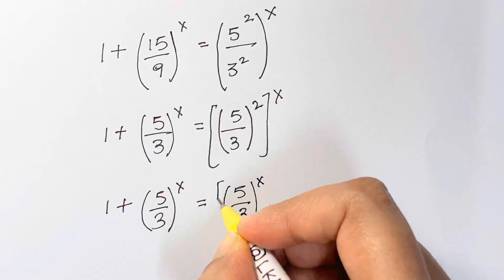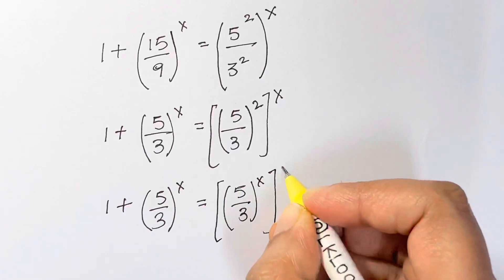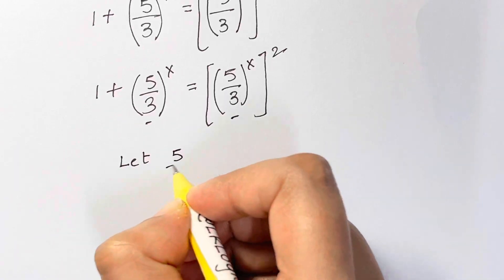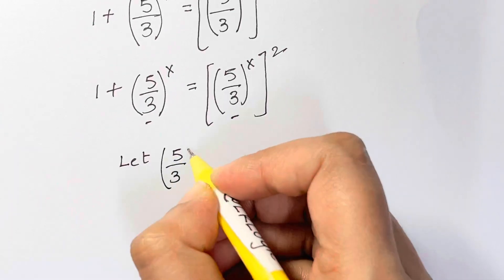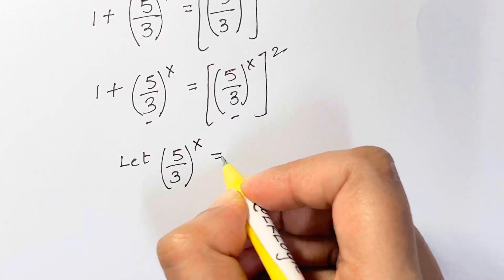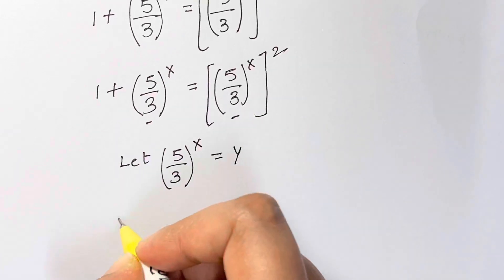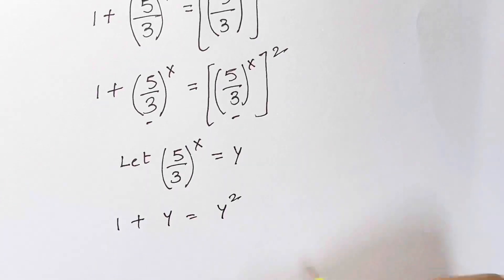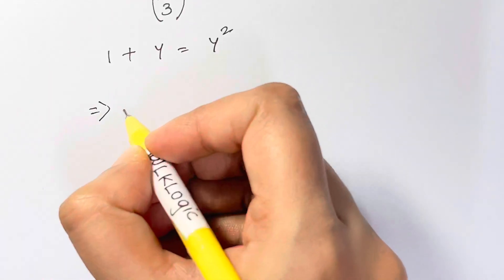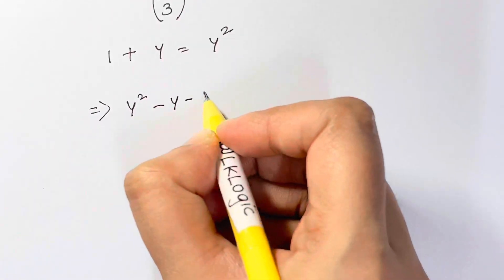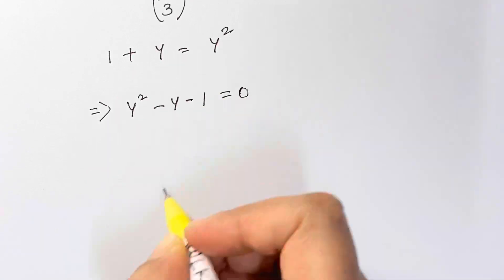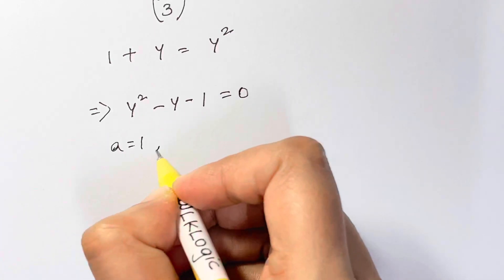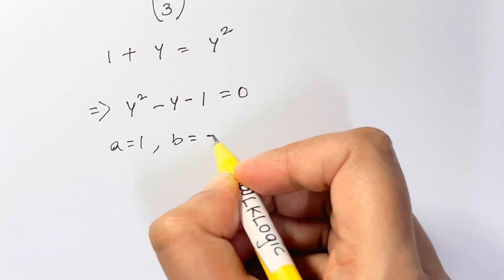Let y = (5/3)^x and substitute back into the equation: 1 plus y equals y squared. Bringing all terms to one side gives y squared minus y minus 1 equals 0.